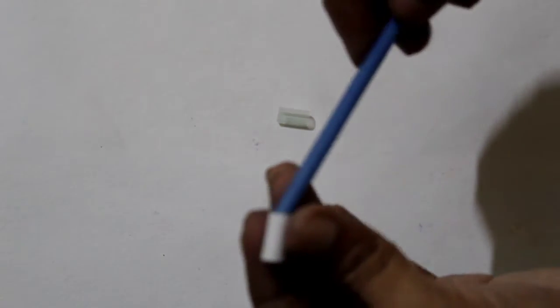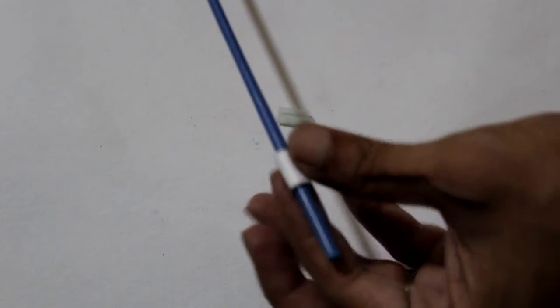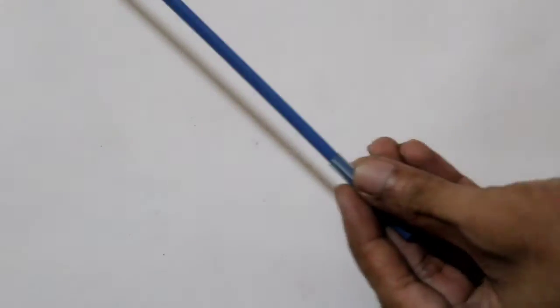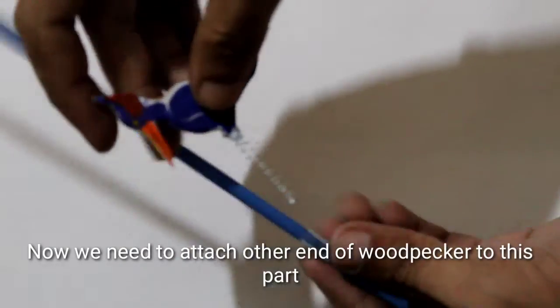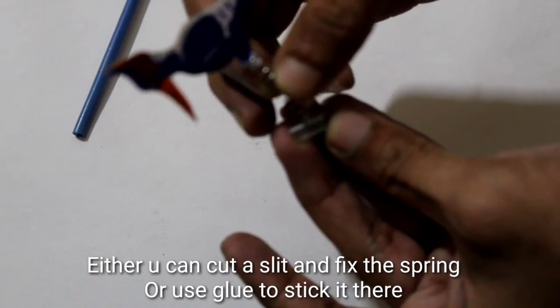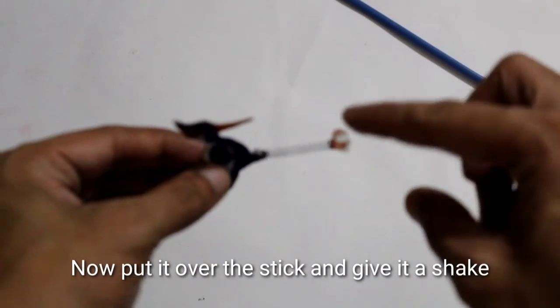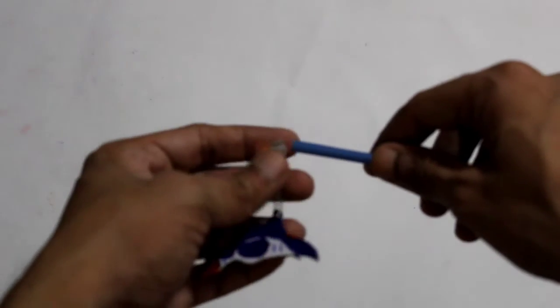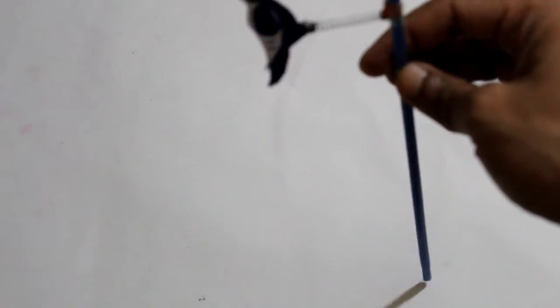I'm going to use a piece of paper for the assembly. Now put it in the spring. Then I'll apply a little bit of oil to make it work smoothly.